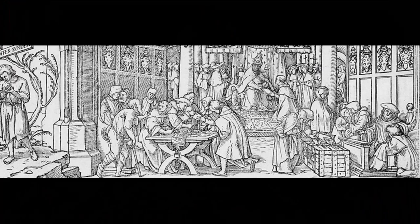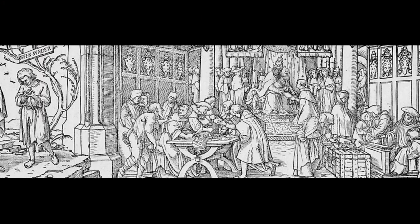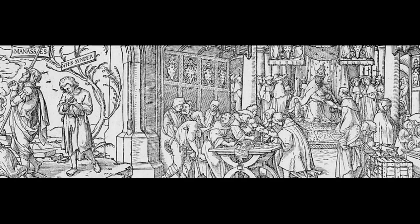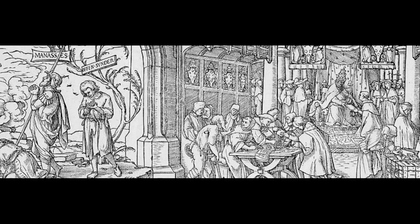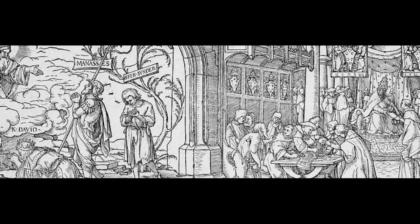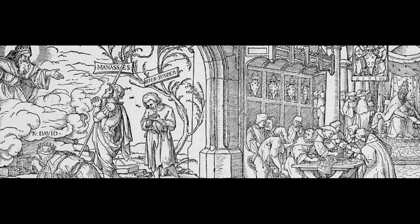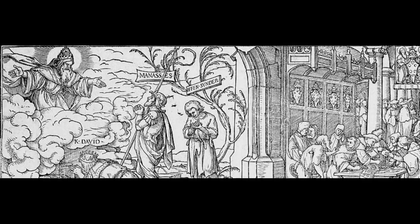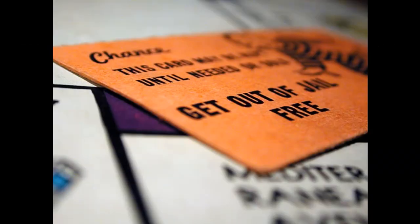Over 100 years before Luther drafted his 95 Theses, in May 1412, a papal legate arrived in Prague, setting up donation boxes for indulgences to fund a crusade against the King of Naples, who was supporting a rival Pope. For those not familiar with indulgences, think of it as a get-out-of-jail-free card with an express ticket to heaven, or at least a shortened time in purgatory.